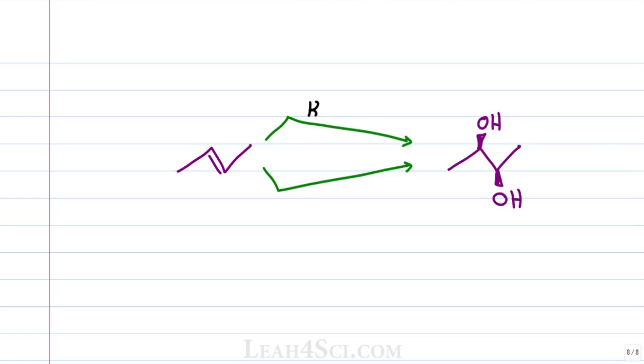A good example of this is the dihydroxylation reaction where you're adding two alcohols, two OH groups to the carbon atoms. That means while this carbon atom is getting oxidized, this carbon is also getting oxidized. We have no reduction to cancel it out.